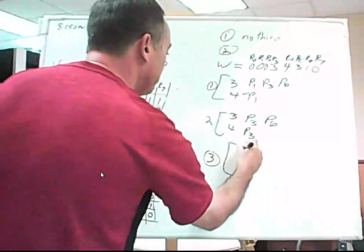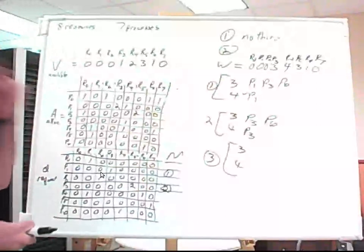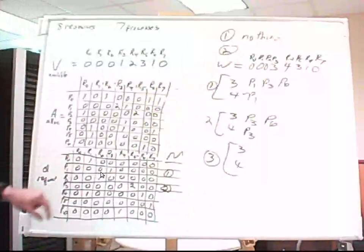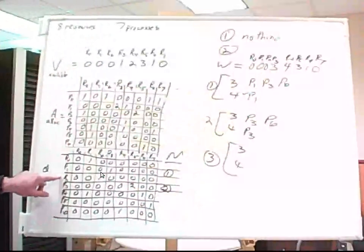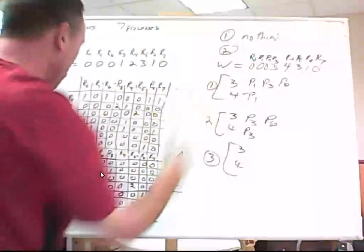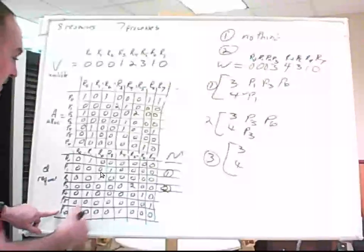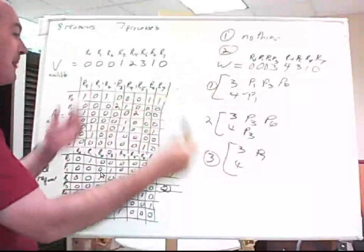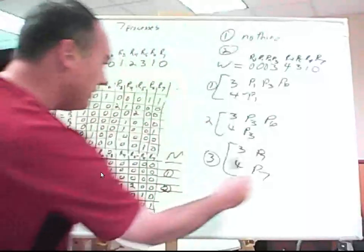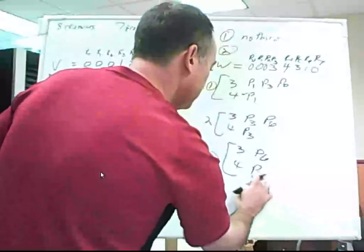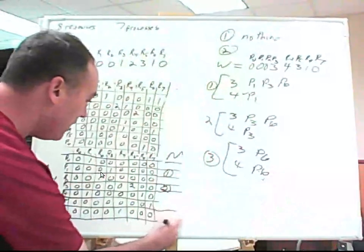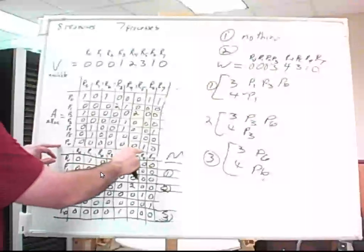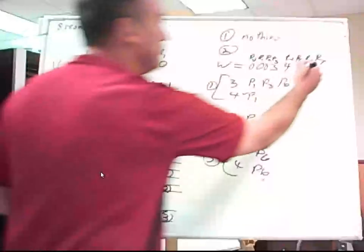On the third pass, processes one and three are now marked. Process zero still needs resource one — none available. Process two still needs resource two — none. Process four still needs resource one — none. Process five still needs resource seven — none. Process six still needs resource four — we have plenty. So we select and mark process six, returning one of resource six back to the system.